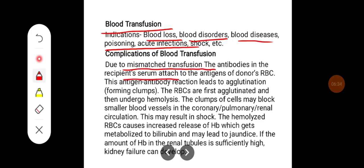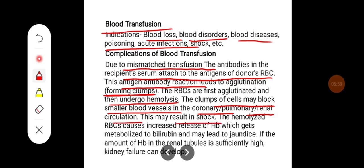This antigen-antibody reaction leads to agglutination — that is, they form clumps. The RBCs first agglutinate and then undergo hemolysis. The clumps of cells may block smaller blood vessels in the coronary, pulmonary, and renal circulation, which may result in shock.